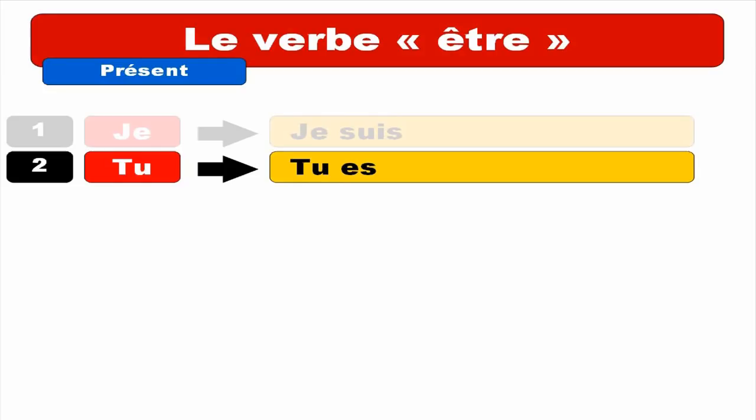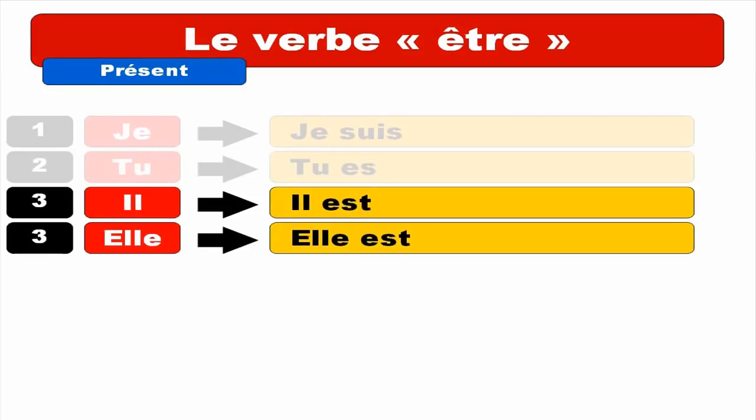And then for IL, masculine — IL EST. It's quite strange because it does sound the same as TU, but there is a final T that you don't pronounce. IL EST. And the form for ELLE — ELLE EST.